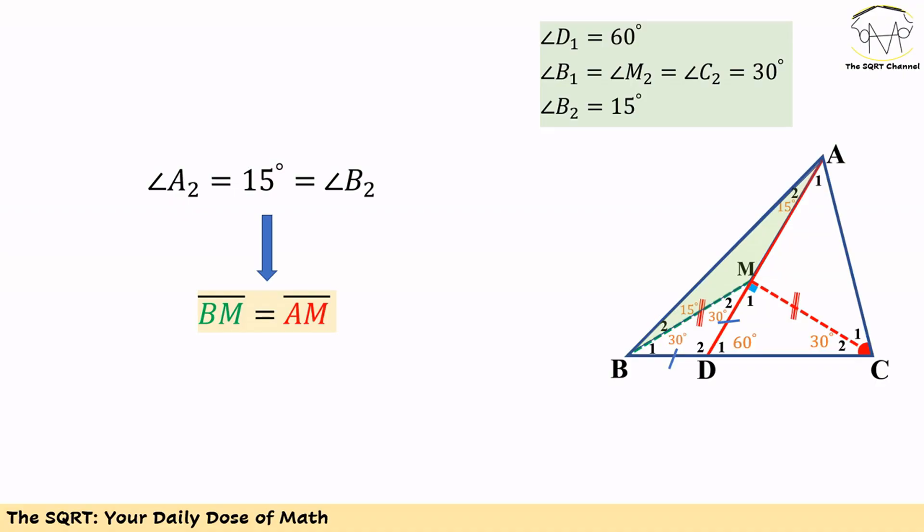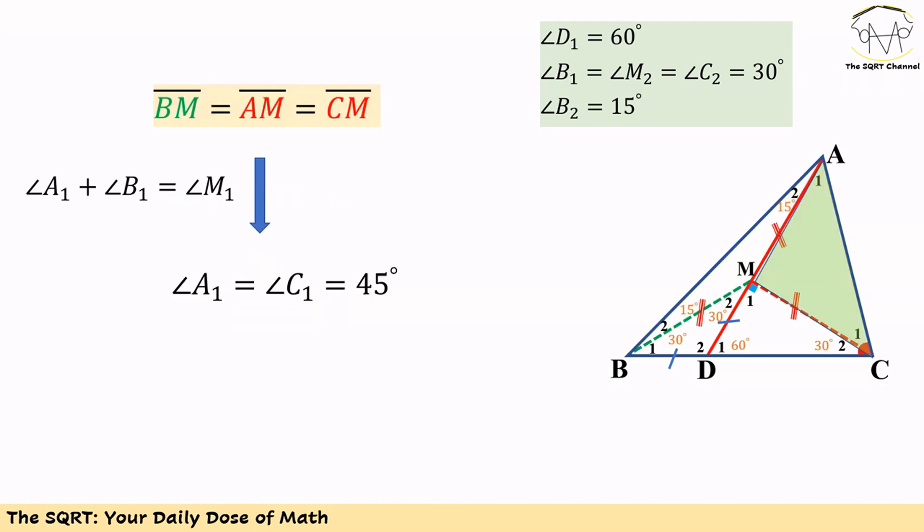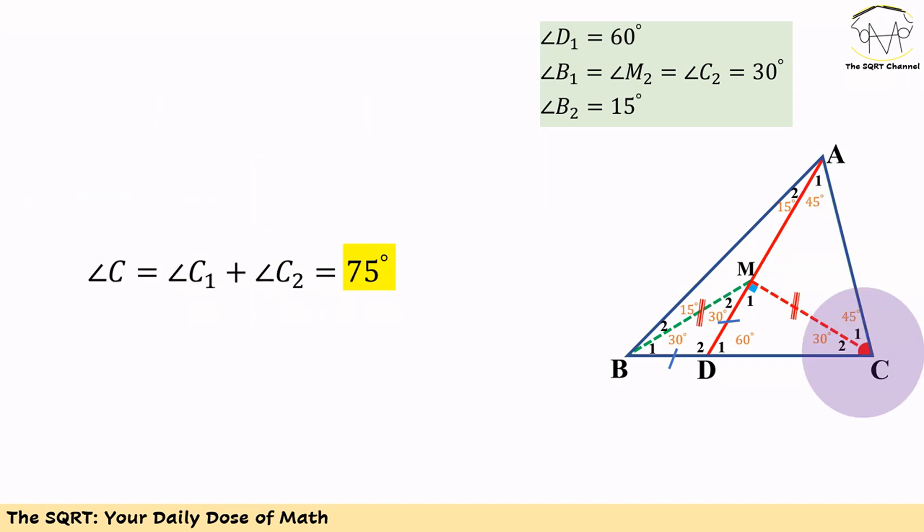Let's move to triangle AMC, which is a right triangle. In this right triangle, AM equals CM, so A1 and C1 are both 45 degrees. Now we have everything we need. We know C1 equals 45 degrees and C2 equals 30 degrees, so angle C equals 75 degrees, and that's our answer.